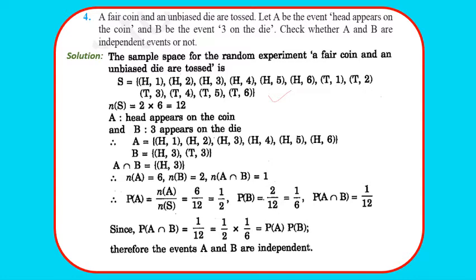A = {H1, H2, H3, H4, H5, H6}, B = {H3, T3}, A∩B = {H3}. So n(A) = 6, n(B) = 2, n(A∩B) = 1. Therefore P(A) = 1/2, P(B) = 1/6, P(A∩B) = 1/12. Since P(A∩B) = 1/12 = P(A) × P(B) = 1/2 × 1/6, hence A and B are independent events.